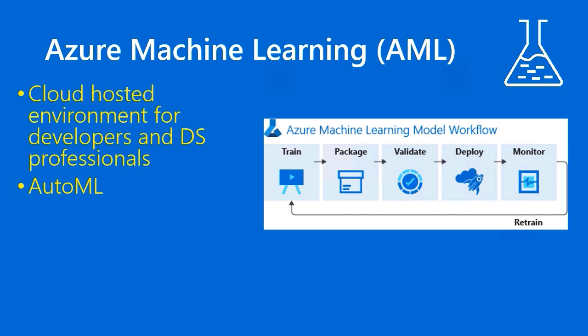AML has an AutoML feature where you can take your source data and just turn Azure Machine Learning loose on it, and it will try out a bunch of different algorithms and report back on which ones fit the data best for accurately giving you a prediction. You can come into AML without even necessarily having AI engineer experience. The model building workflow is that you train your model, package and validate it, then deploy it — normally as a web service exposed as an API — and connect your application to that Azure backend.